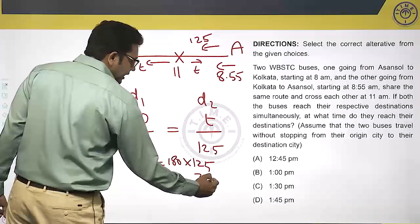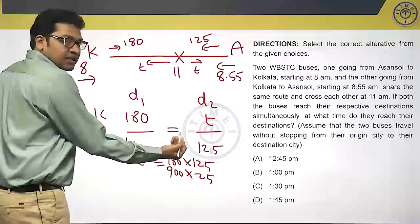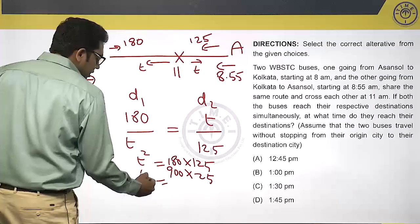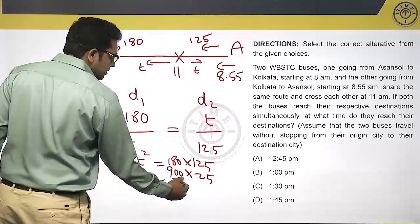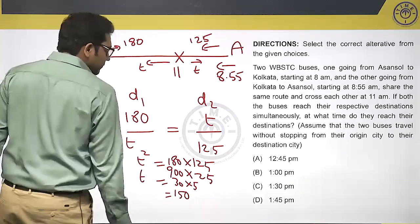125 is 25 times 5. 5 times 180 will be 900. So, T square is 900 times 25. Therefore, T will be 30 times 5, which is 150.